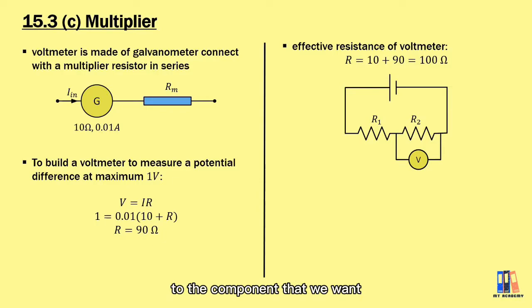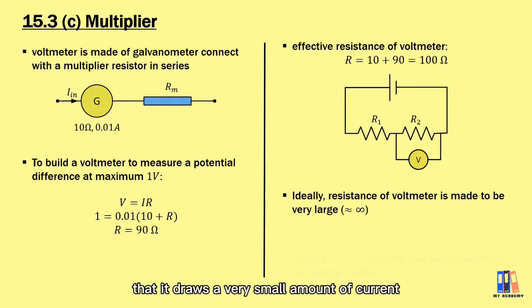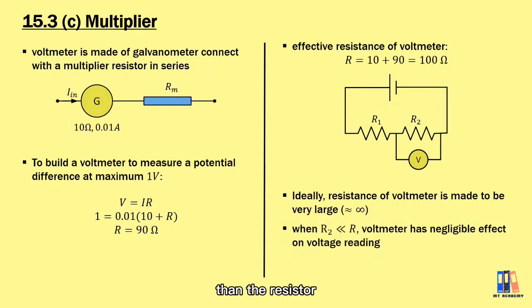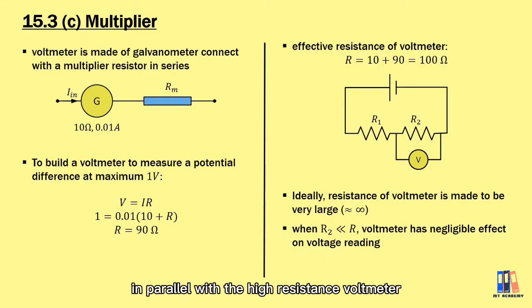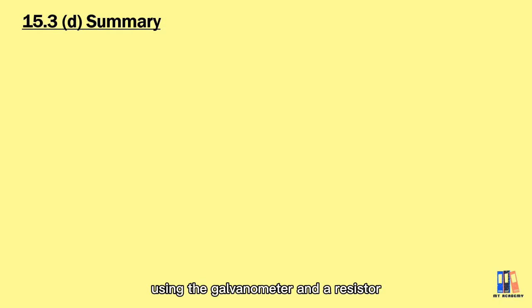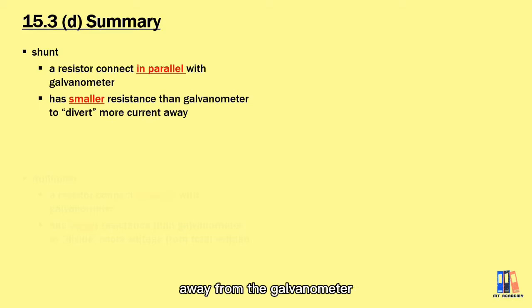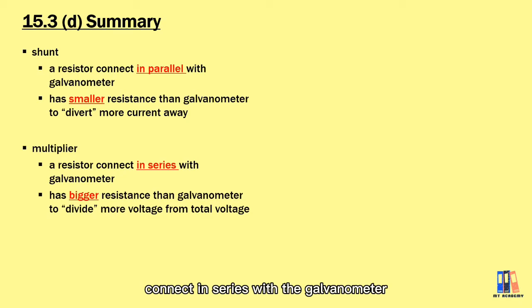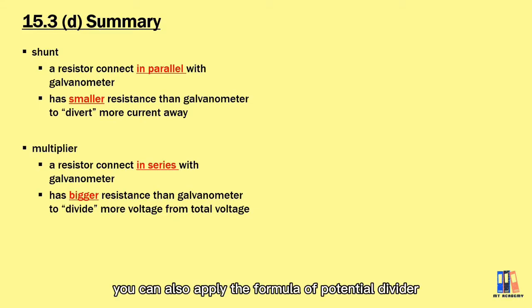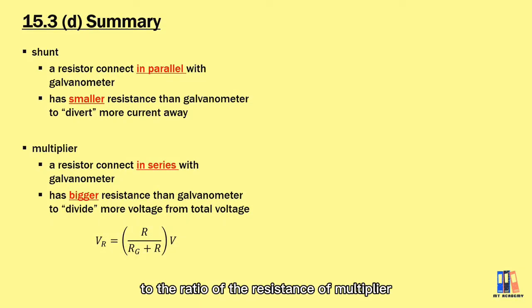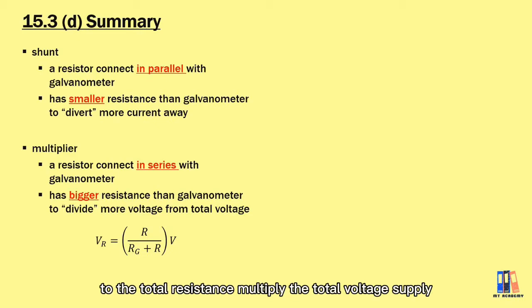The effective resistance of the voltmeter equals 100 ohms. In experiments, we connect the voltmeter in parallel with the component whose potential difference we want to measure. Ideally, the resistance of the voltmeter should be as large as possible so it draws a very small current from the circuit. To summarize: a shunt is a resistor connected in parallel with the galvanometer with very small resistance to divert more current away; a multiplier is a resistor connected in series with the galvanometer with very large resistance to divide more voltage from the total supply. You can also apply the potential divider formula — the voltage across the multiplier equals the ratio of the multiplier resistance to the total resistance, multiplied by the total voltage supply.